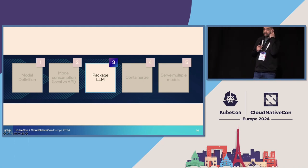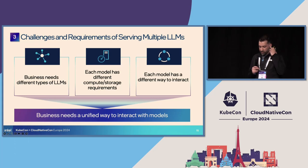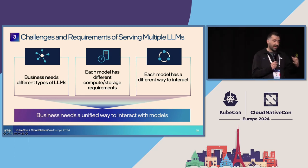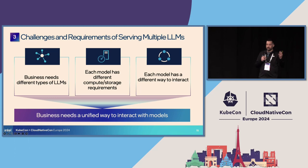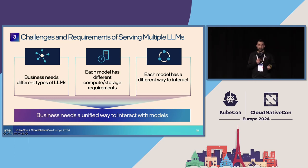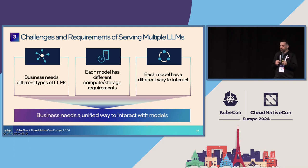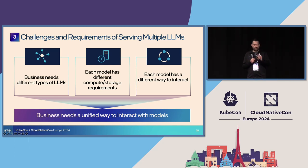Now let's go to packaging. We have the model and we've defined local or external — now we need to make it a package. Recapping the first point: we need to meet multiple business needs, so we have multiple models with different ways to be accessed and different compute or storage requirements. You may need a big model, an optimized model, or a fine-tuned model. As the IT or technical part, you need to provide a unified way to interact with all of those models.